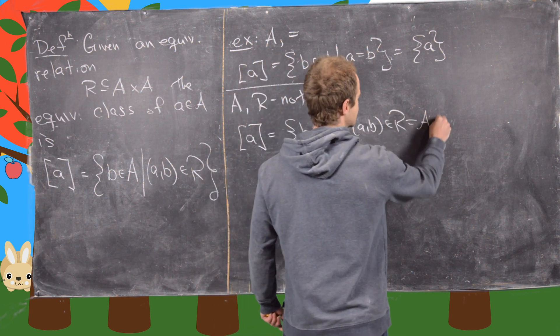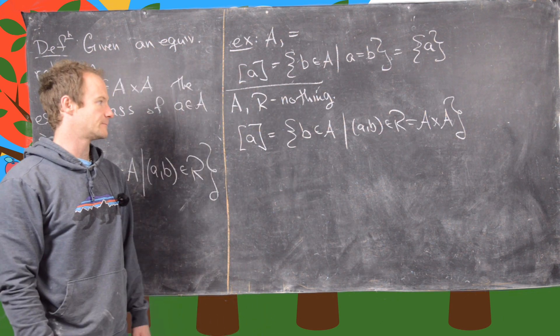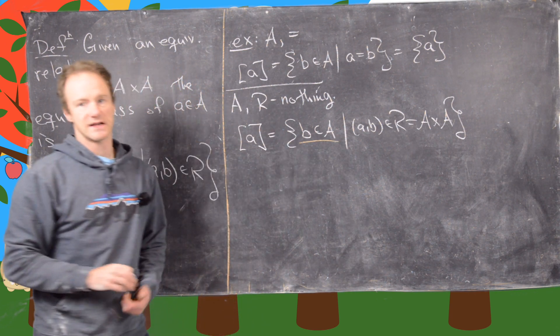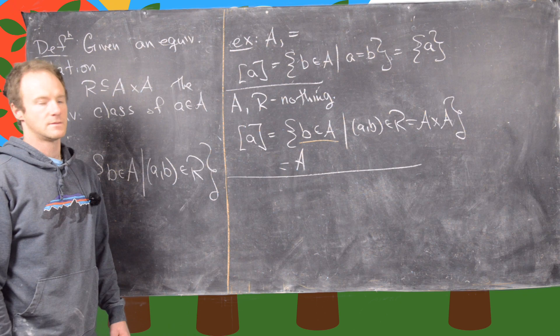But remember, R in this case was just the whole set A cross A anyway, which tells us that any element from A satisfies this. So this gives you the whole set. Okay.